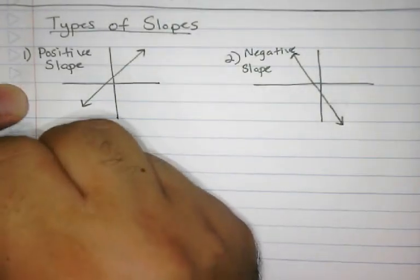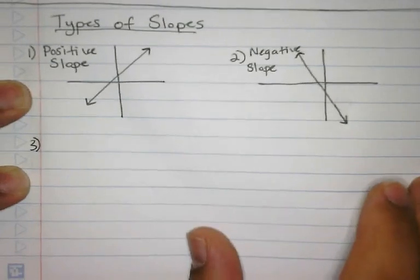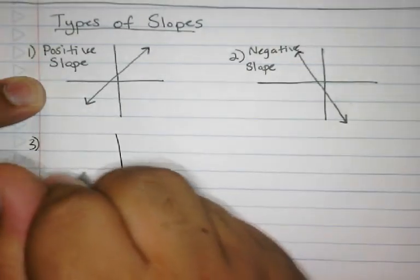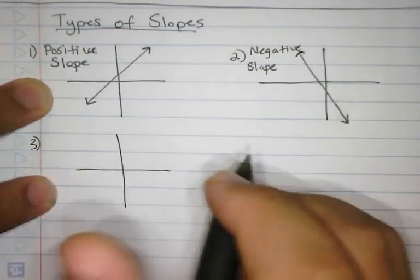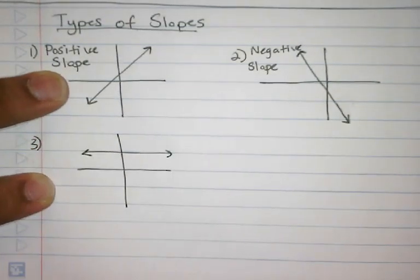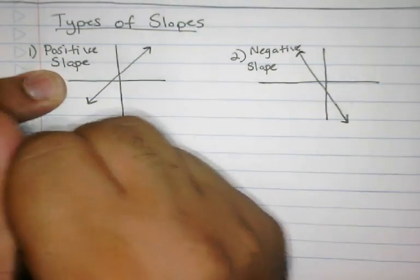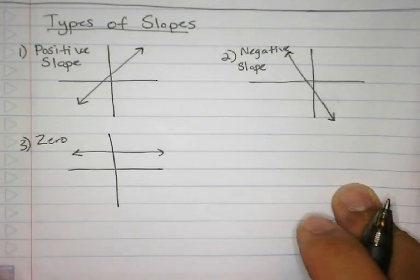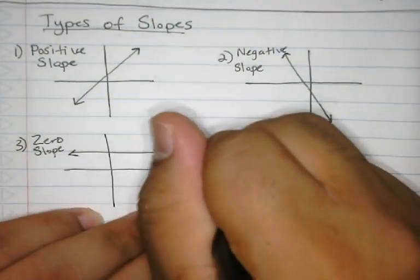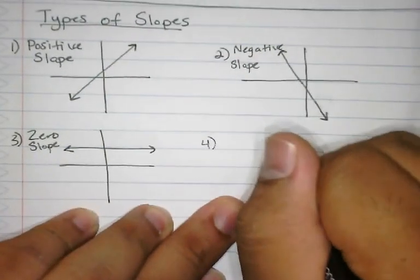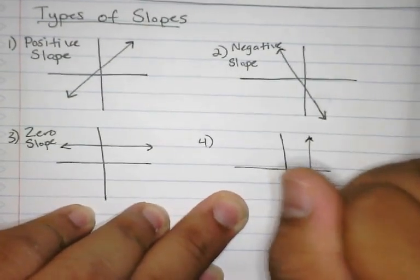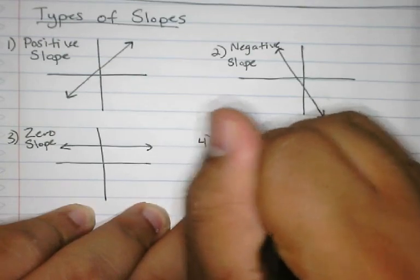If you have one that looks like this — flat — it's called a zero slope. And the last one, if you have a graph that is straight up and down, then it is undefined.